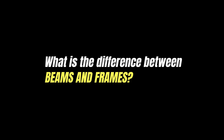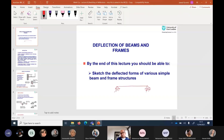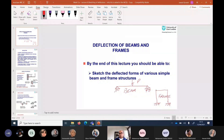What is the difference between beams and frames? If you draw two supports with a middle load applied, that is a beam. If you have vertical members with fixed supports and a horizontal member connecting them, that is a frame. A beam is basically a horizontal member subjected to bending, and a frame can consist of both horizontal and vertical members.